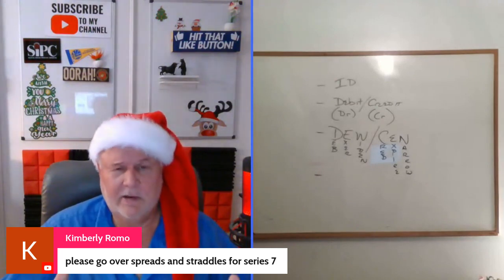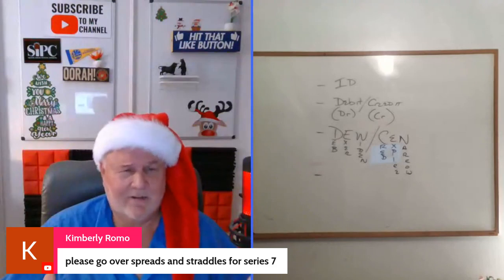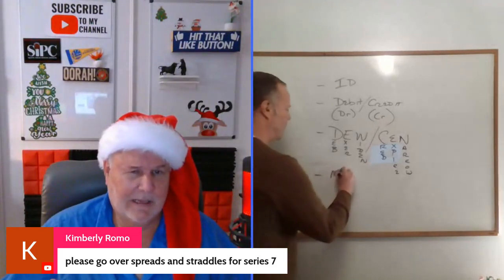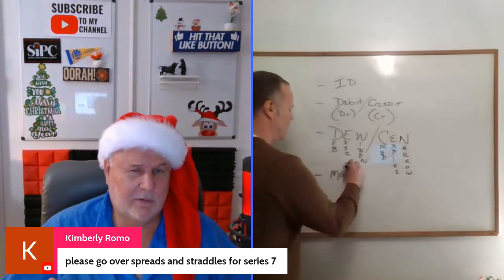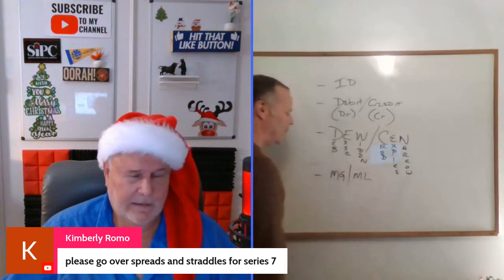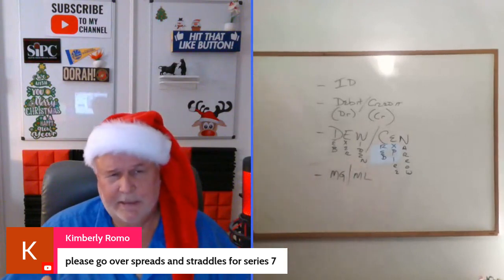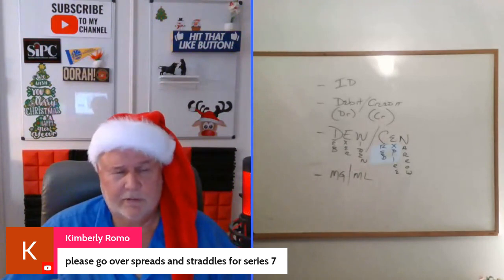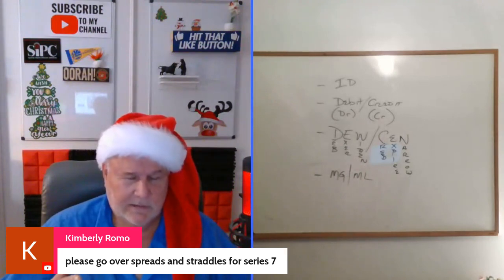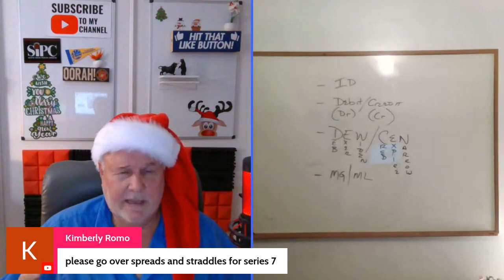The next thing you've got to be able to do is determine max gain. For a credit spread, max gain is going to be the credit. For a debit spread, it's going to be the difference in the strikes less the debit. Those two numbers — max gain and max loss — are going to add up to the difference in the strikes.